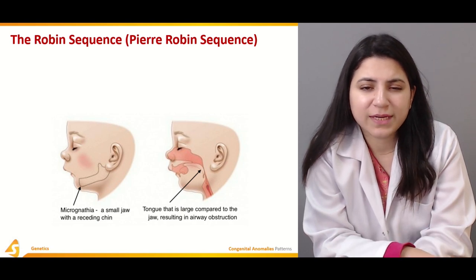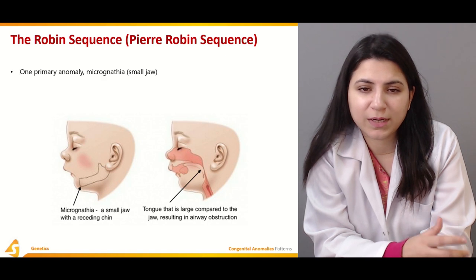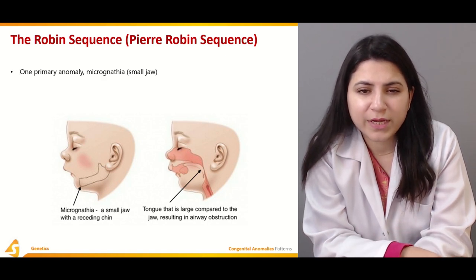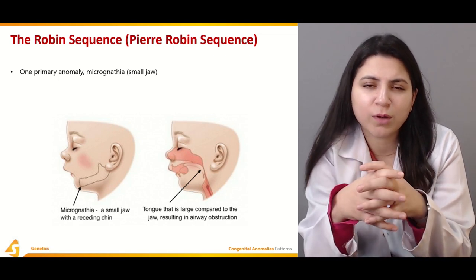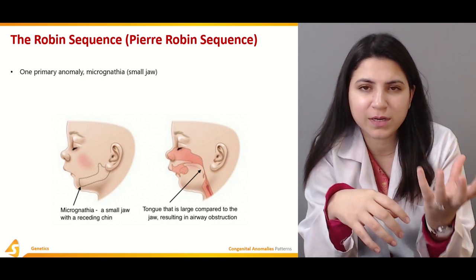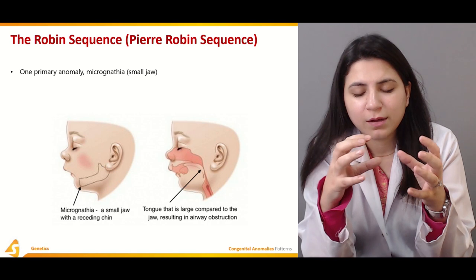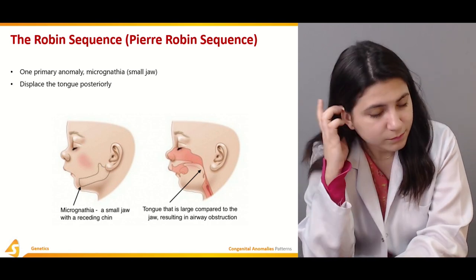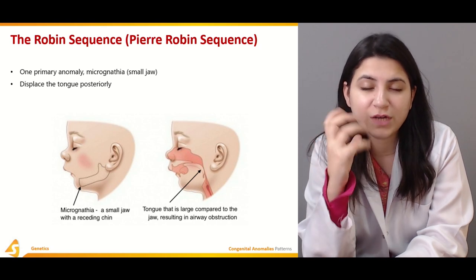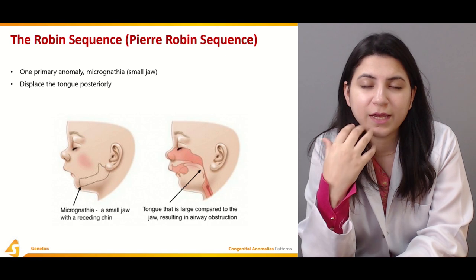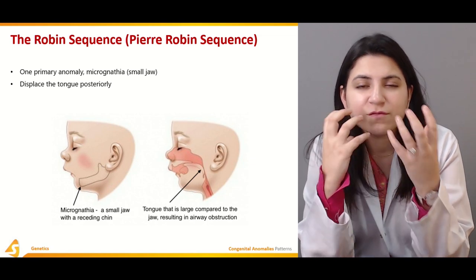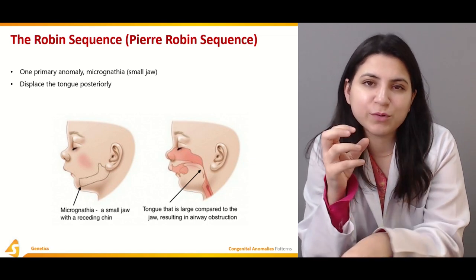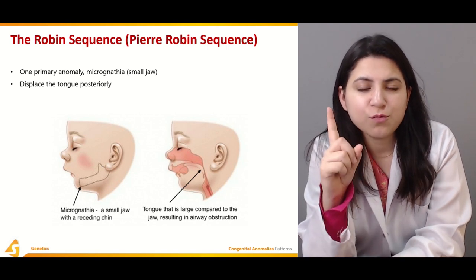The Robin sequence, commonly termed Pierre Robin sequence, is one example in which there is one primary anomaly — micrognathia, or a small jaw. All the anomalies present in a patient with Robin sequence are interconnected to this primary anomaly. The first consequence is displacement of the tongue posteriorly, because with a small jaw there is very little space for organs to arrange properly.